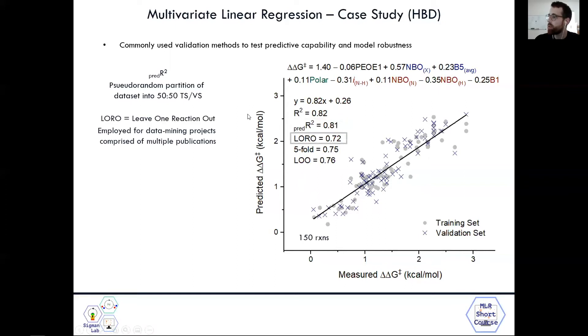Next, we can look at LORO, which is leave one reaction out. It was recently developed for these data mining projects that are comprised of multiple publications to build a large data set. So how this works is one publication is removed from the full data set and held as a validation set. The model is retrained on the remaining data. And then we get the predict R-squared value for that validation set. And this is done for every publication in the data set. So you get a LORO average score. So for this case, we have a 0.72 average score of that, which is a pretty good score, indicating that the data set and the model are not biased towards one specific publication, which is what we'd like to see.